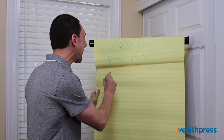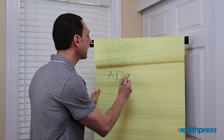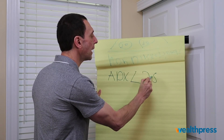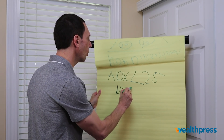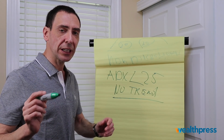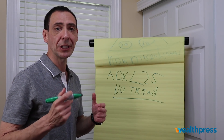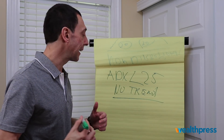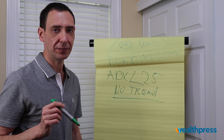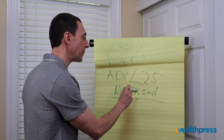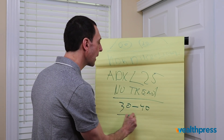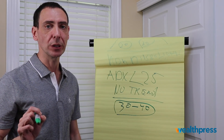If the ADX is below 25, that means there is no trend. You need to first figure out if the market is moving higher or lower, and then determine whether the ADX is greater than 25. If it's not greater than 25, the market is not trending. When the ADX gets to 30 or 40, that means the trend is now really, really strong.